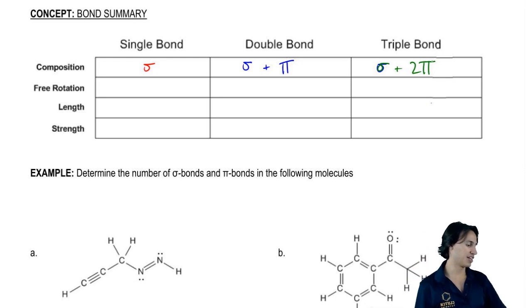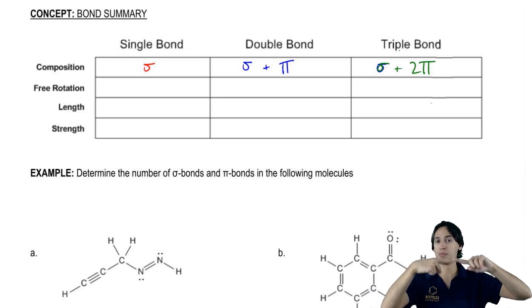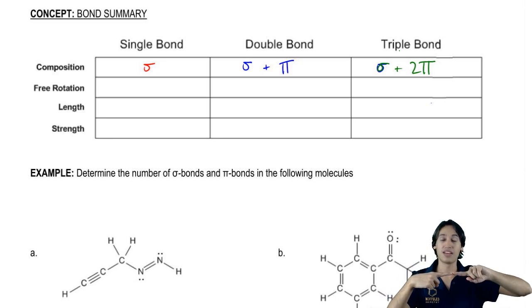Remember that a bond is just a region of shared space with electrons. So if I just have one interaction in the middle where they're overlapping, is it possible to rotate one of the atoms and keep the bond intact? And the answer is yes. If I rotate this atom, I can still keep this bond together.